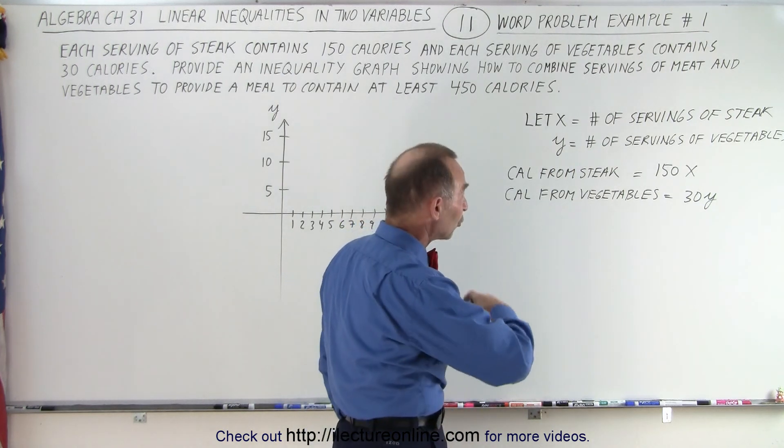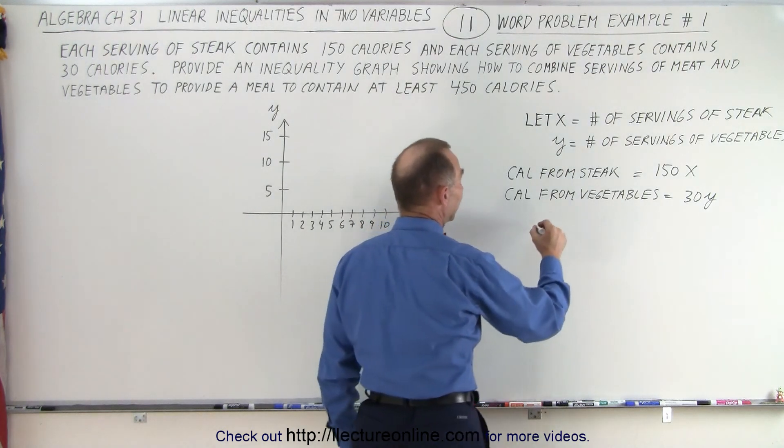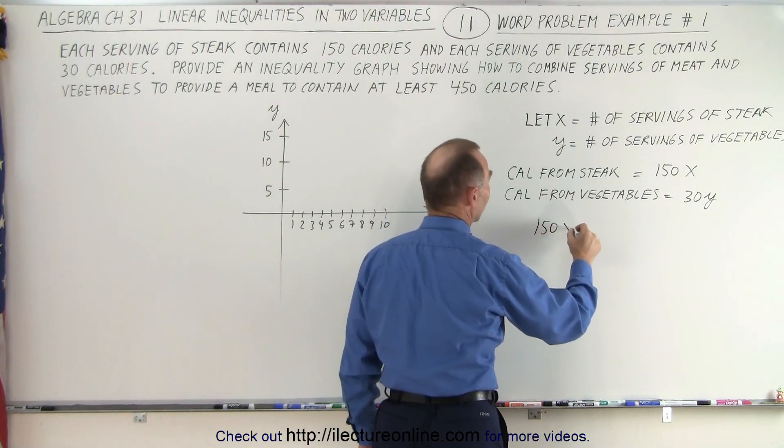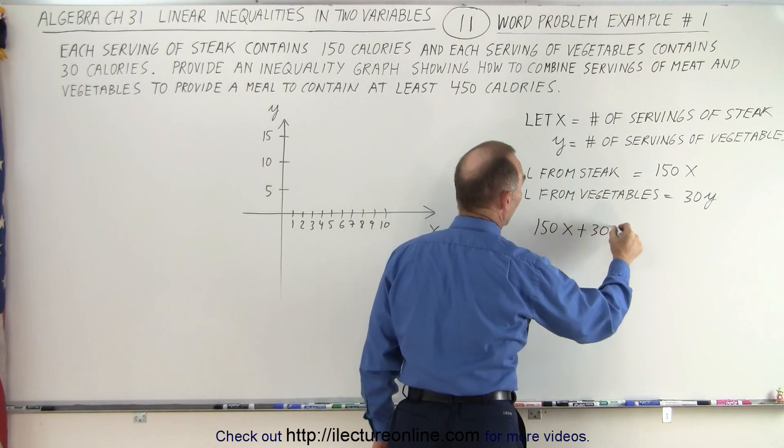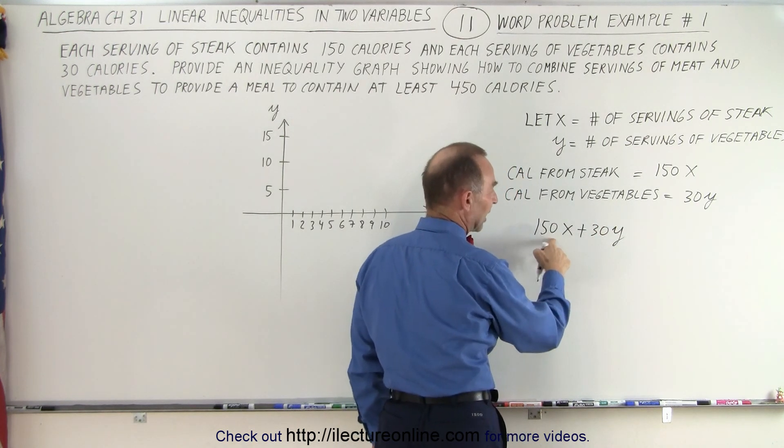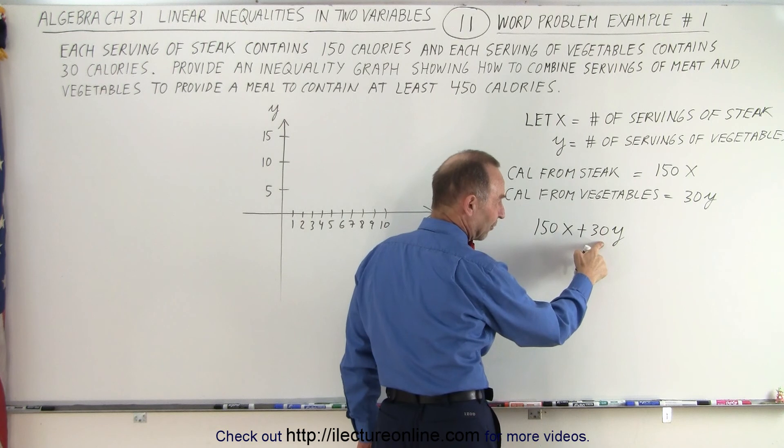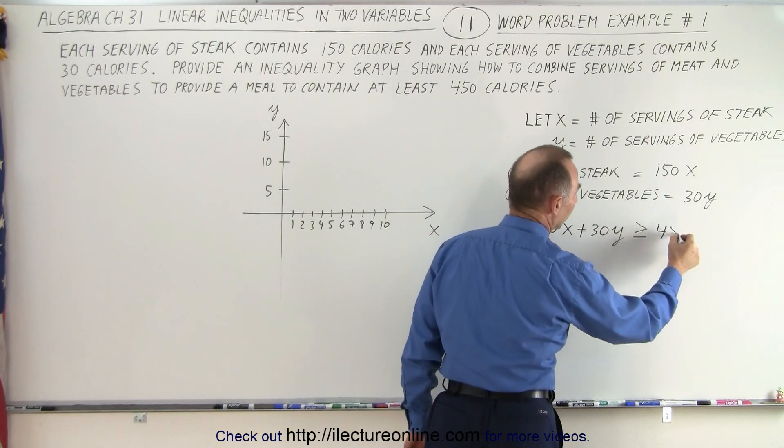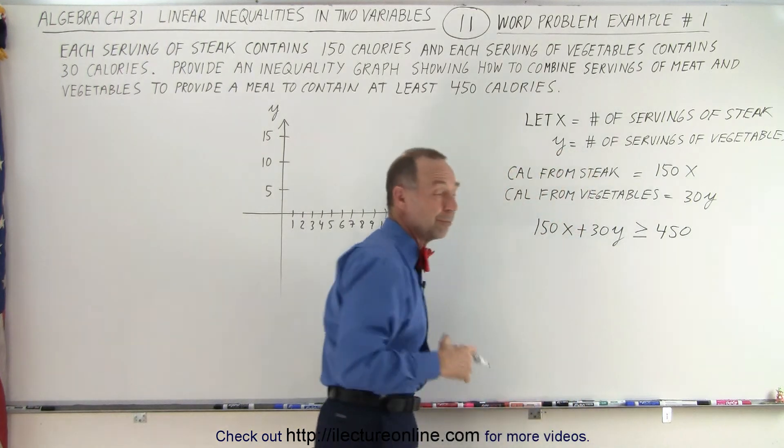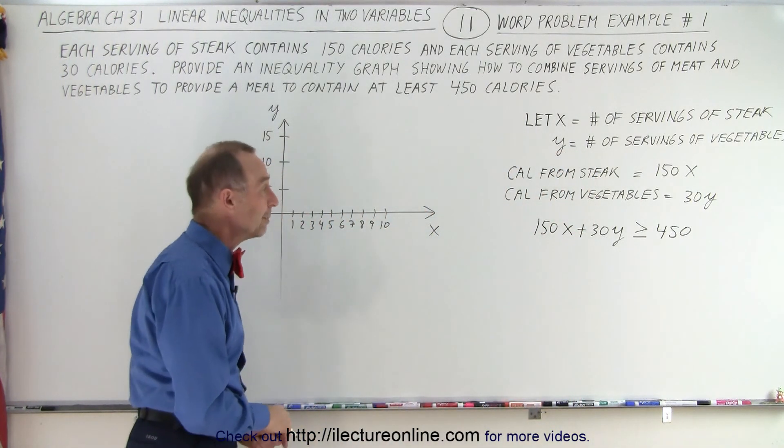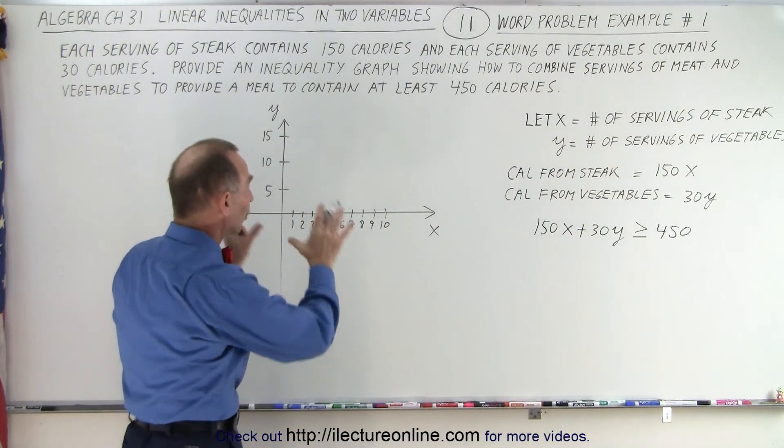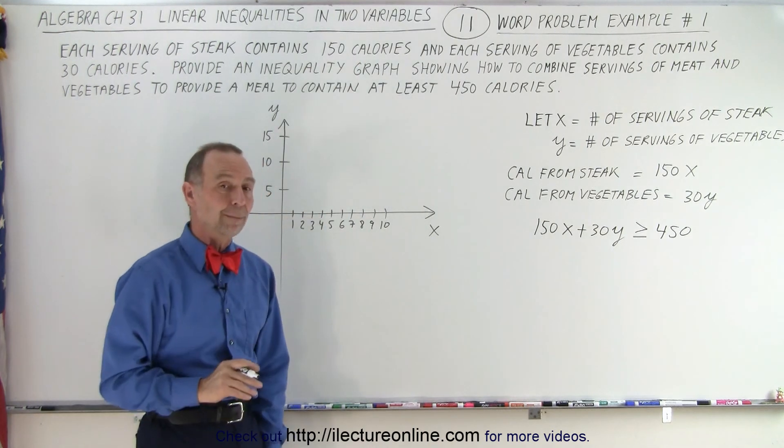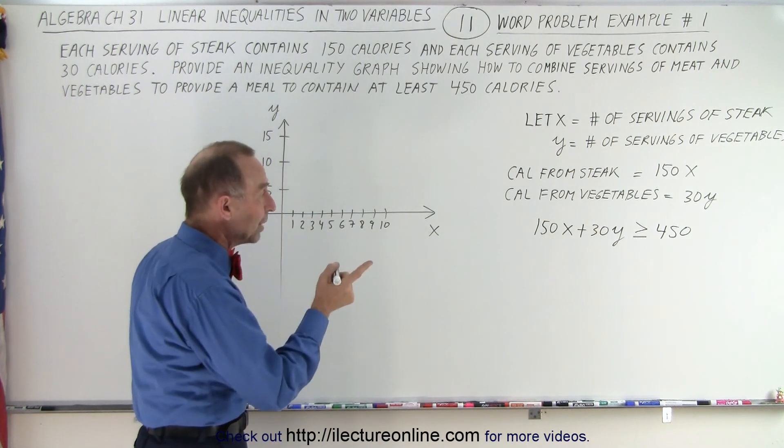To get the total calories for the meal, we take 150x plus 30y. This is the total number of calories from the steak plus the total number of calories from the vegetables. That should be greater than or equal to 450, because that's the minimum number of calories we should have in the meal. We're going to graph just like we did before.